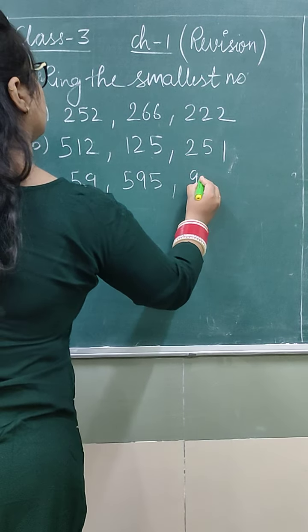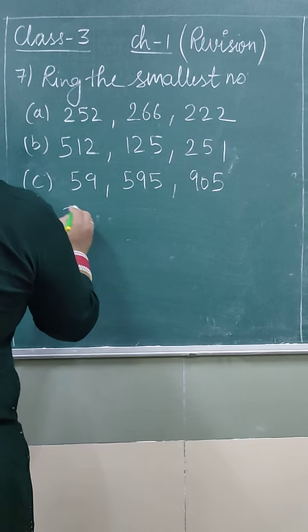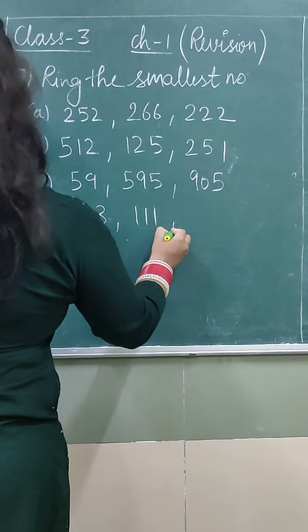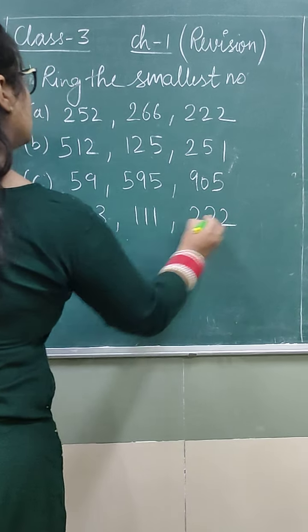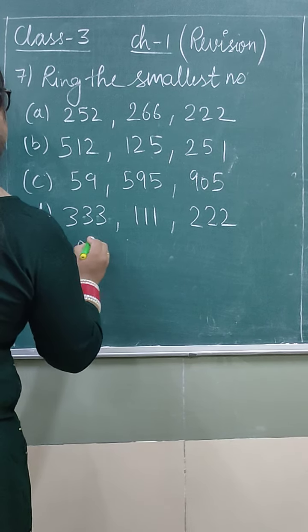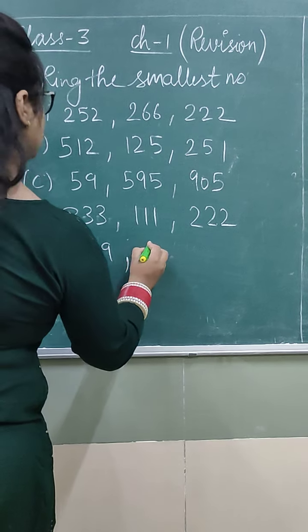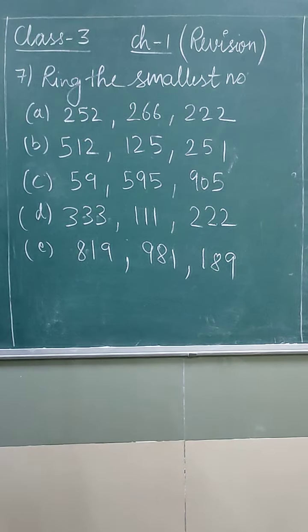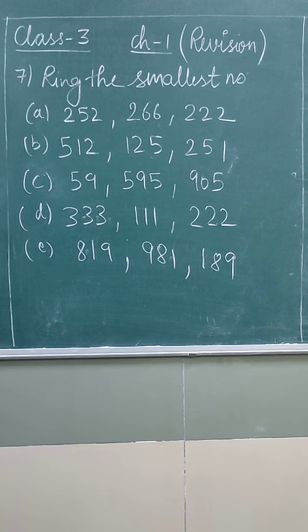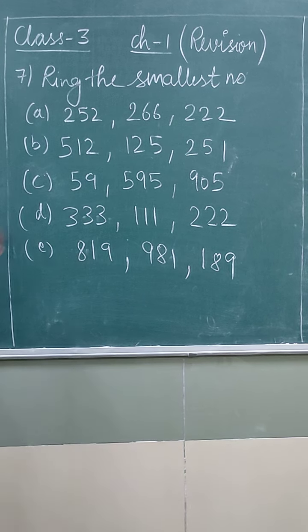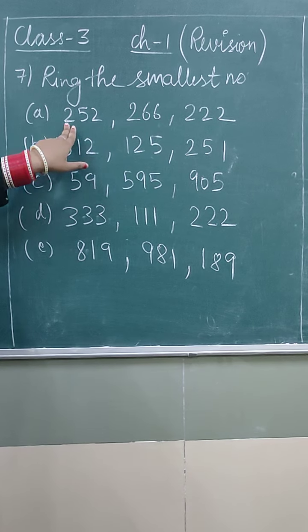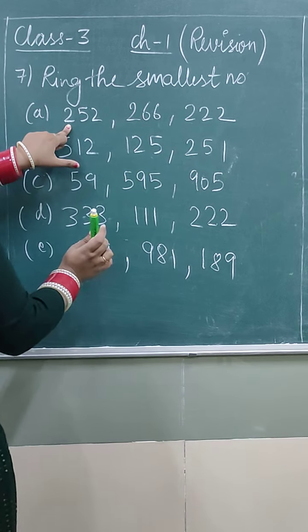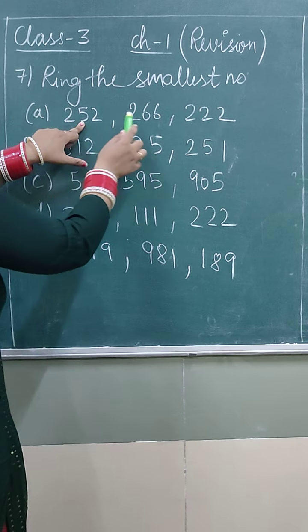In C part we have 595, 905. In D part we have 333, 111, 222. In E part we have 819, 981, 189.